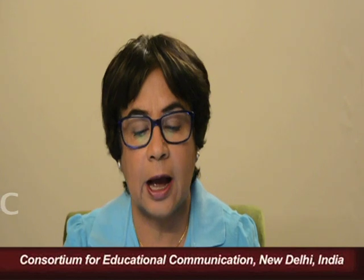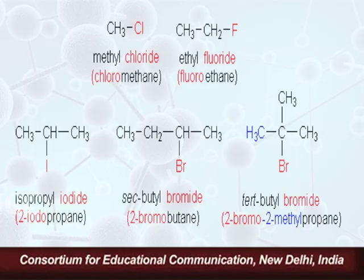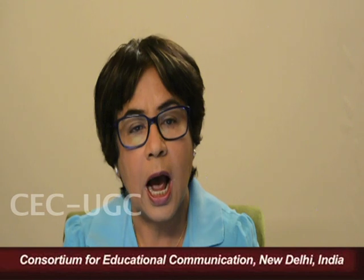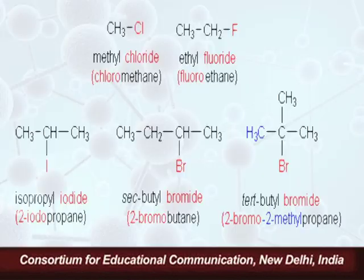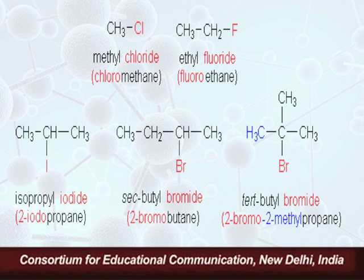In the next example, the iodo group is attached to a secondary carbon. This alkyl group is an isopropyl group — a group with three carbons indicated by 'propyl,' and 'iso' indicating that the last carbon is joined to the next carbon with a methyl group. This compound is therefore named isopropyl iodide.